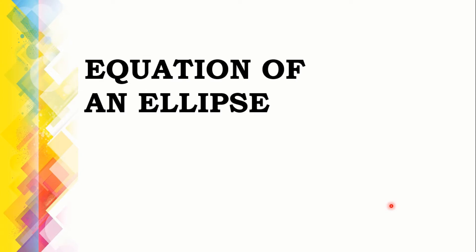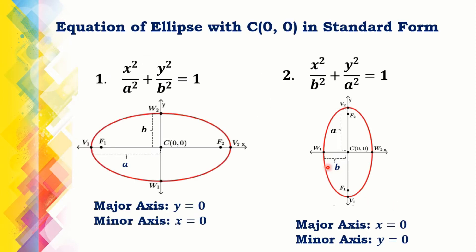Let's have the equation of an ellipse. There are two standard forms of the equation of an ellipse with center at (0, 0). First, we have x squared over A squared plus y squared over B squared equals 1. And the other is x squared over B squared plus y squared over A squared equals 1. To easily recognize which equation will be used, note that the standard equation of an ellipse has denominators A squared and B squared, and A squared is always greater than B squared.